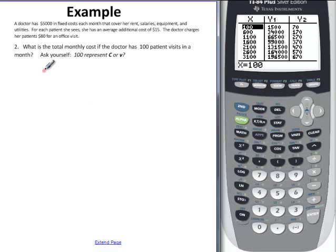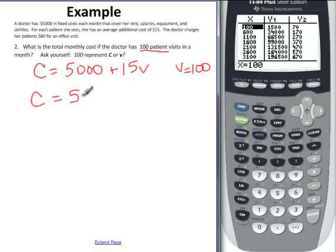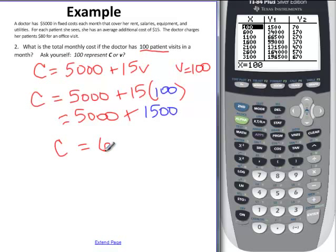So what is the total monthly cost, now that we know what that was, and let's remind ourselves it was C was equal to $5,000 fixed plus $15 per visit. And we want to know what the cost will be if we have 100 patient visits in a month. So that means that V is going to be 100. Patient visits is 100, so we say cost, we plug and chug, $5,000 plus our 15 times our V, which is 100. And then we have $5,000 plus $1,500. So cost is going to equal $6,500 if they have 100 patients in a month.